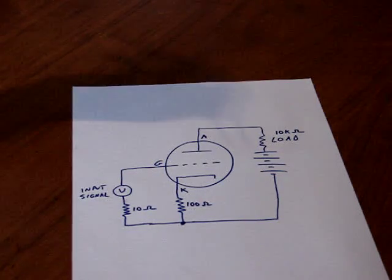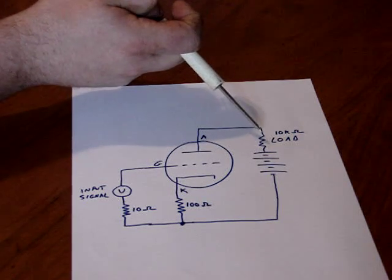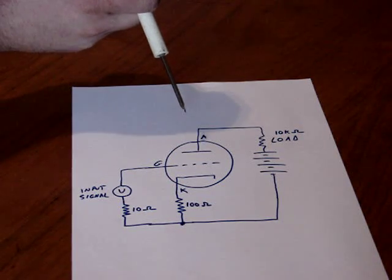The biggest thing that a tube would require is an output transformer. Most loads, like a speaker, is only eight ohms. Well, tubes are high voltage, low current devices.